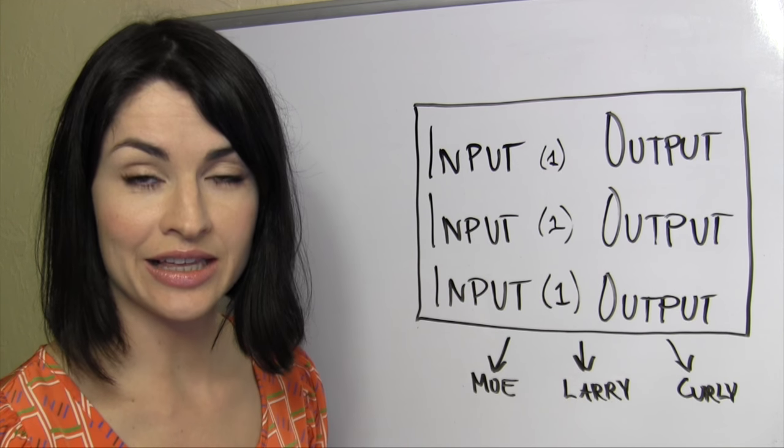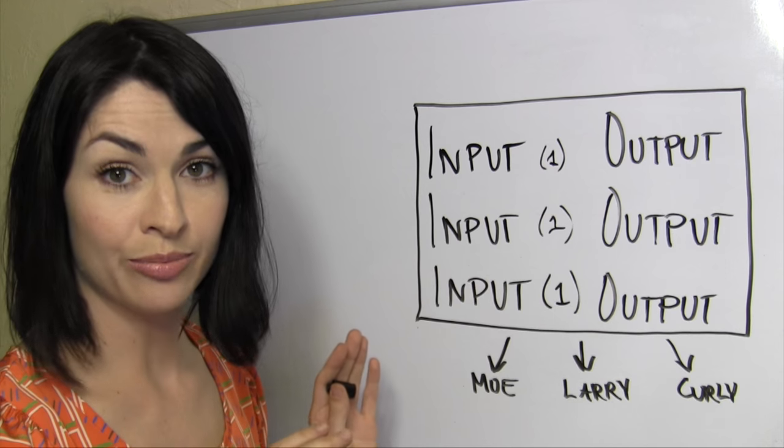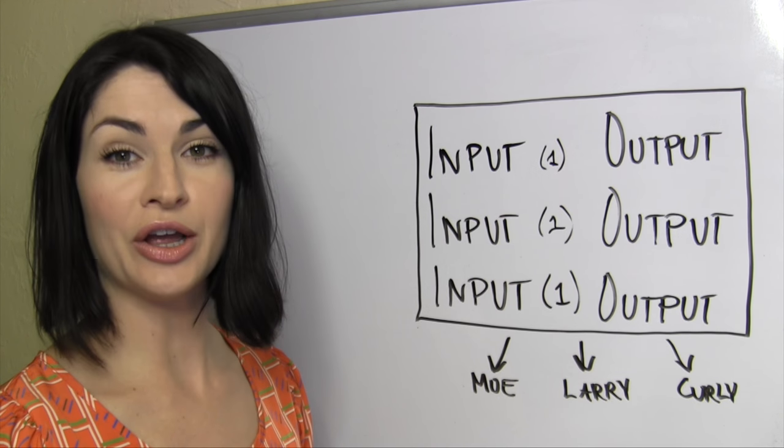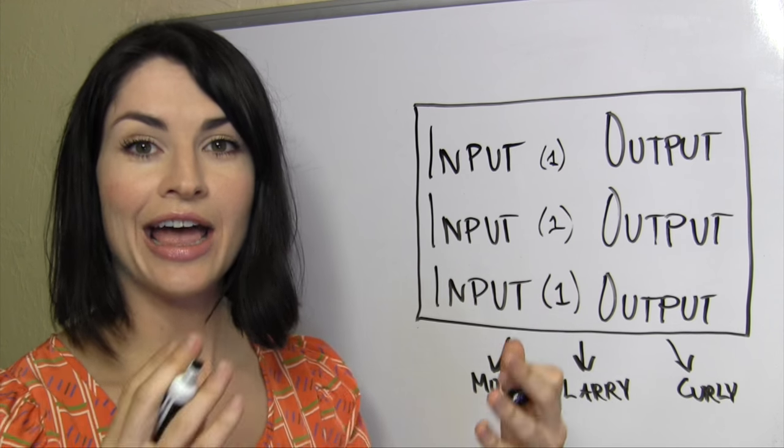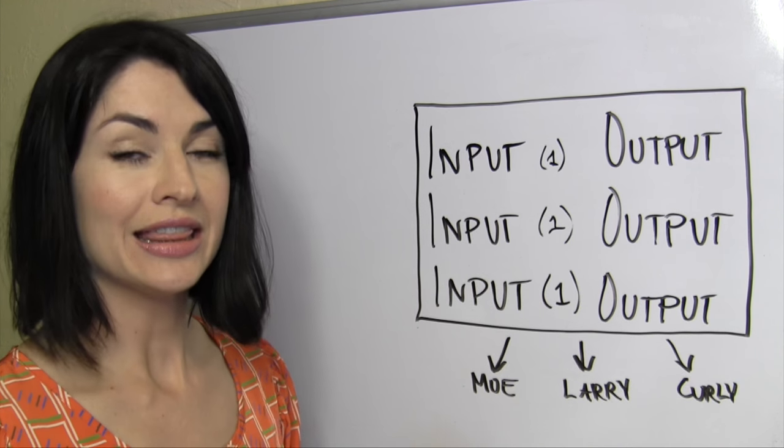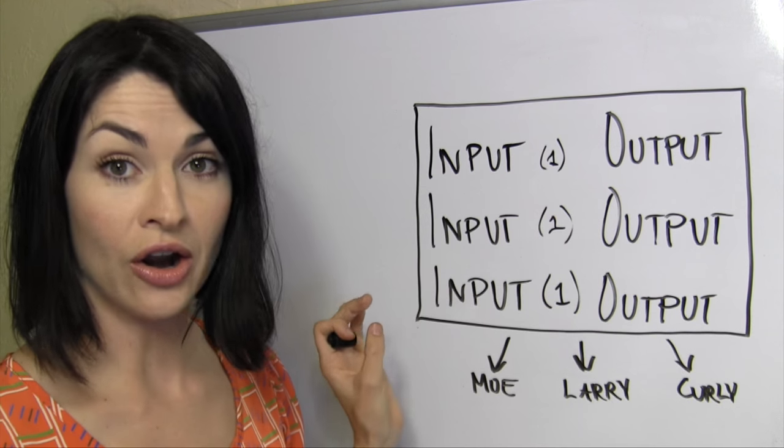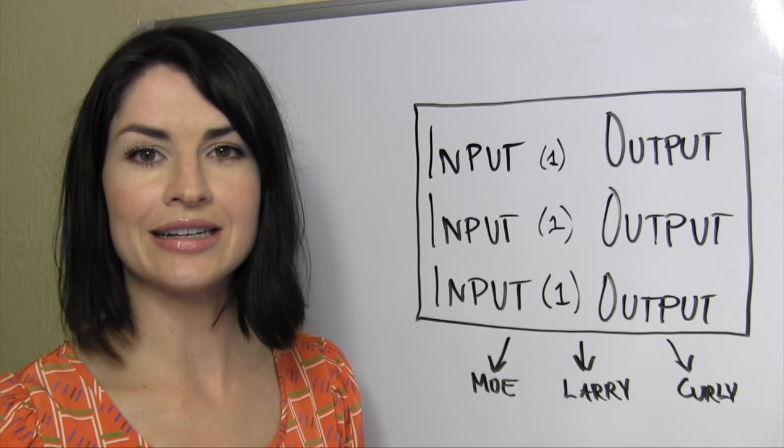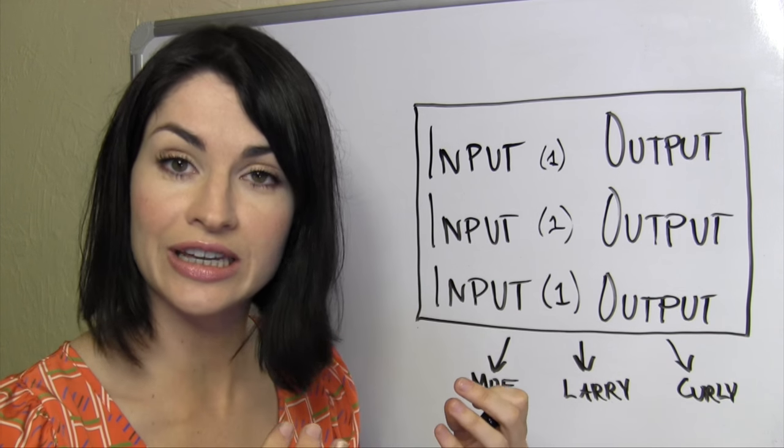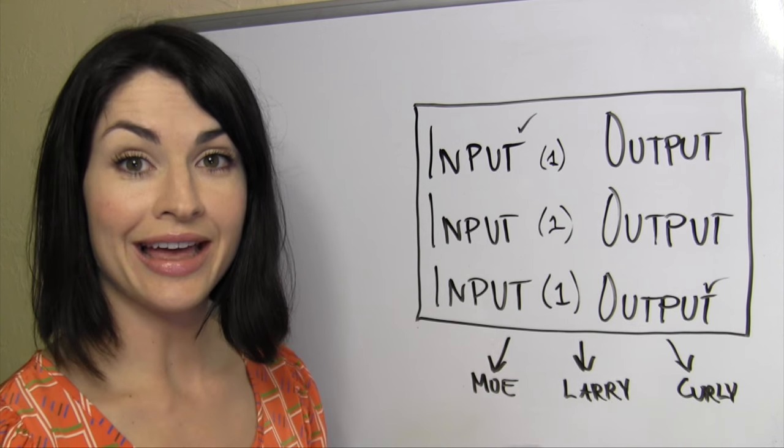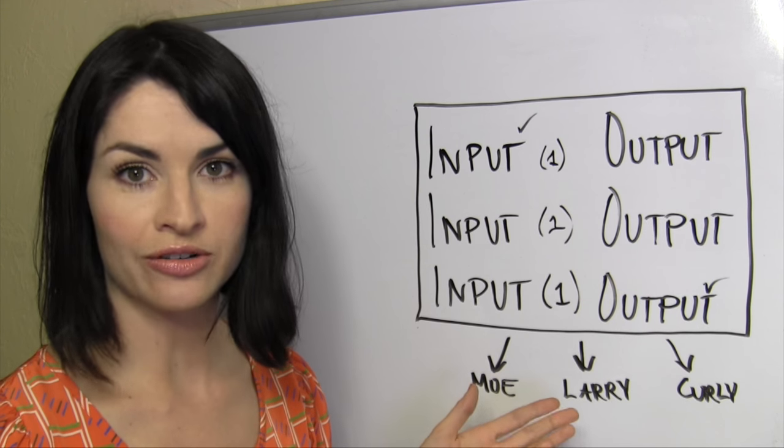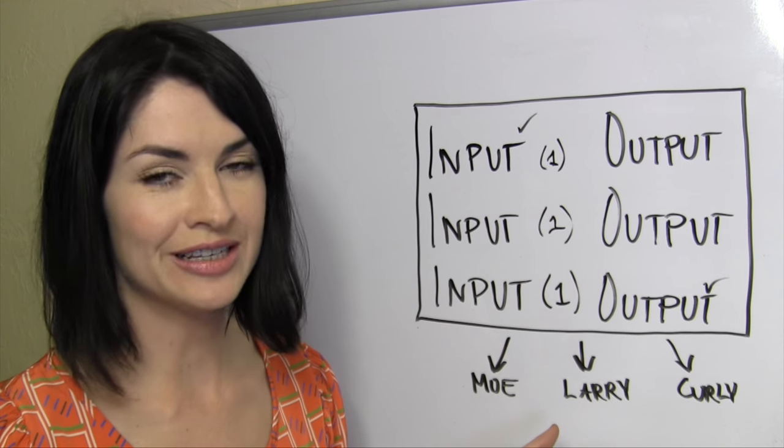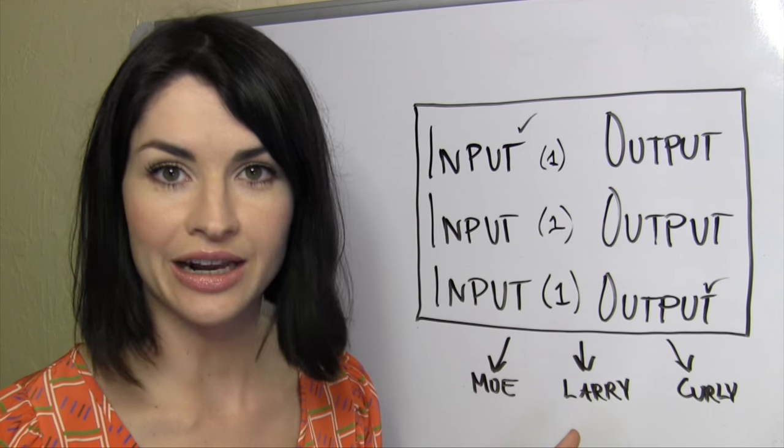And the second thing that the wallets check for is that their input and output that they originally submitted, that is, their address where their one dash currently resides and where they'd like it to reside, they make sure that those addresses are accurate in this transaction as well. Again, to make sure that the masternode isn't trying to send some dash to itself in a sneaky way. Moe will see that his input and output are correct, check, though he doesn't know which addresses belong to which of his mixing partners. Again, that's the point.